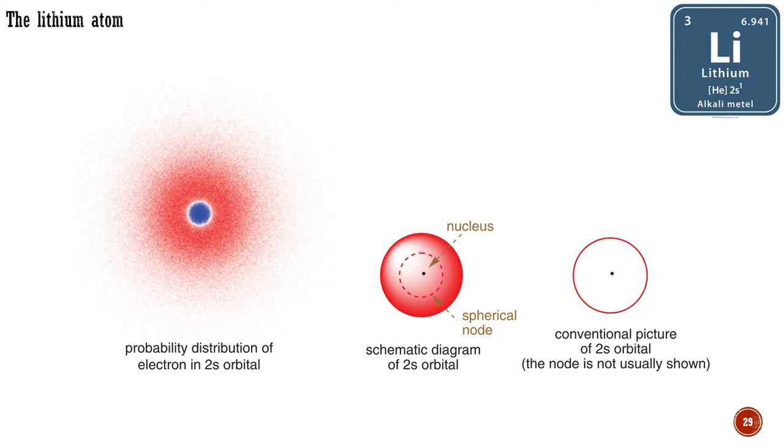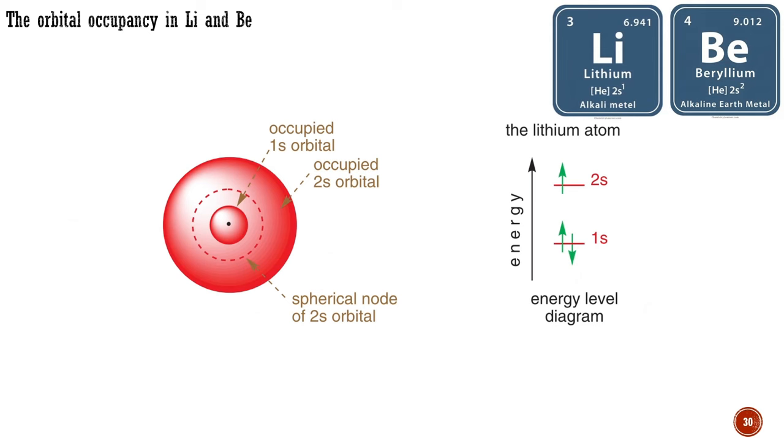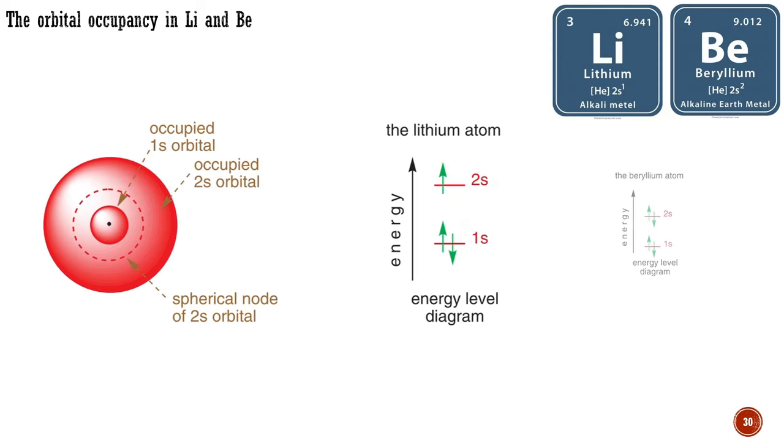Originally, the s did not stand for spherical, but as all s orbitals are spherical, it is fine to remember it that way. In a lithium atom, the 1s orbital, which is close to the nucleus, is occupied by two electrons, while the 2s orbital, further from the nucleus, contains one electron. In beryllium, there is a second electron in the 2s orbital. As before, the energy levels change as the nuclear charge increases. Therefore, the orbital occupancy in lithium and beryllium can be represented as shown here.